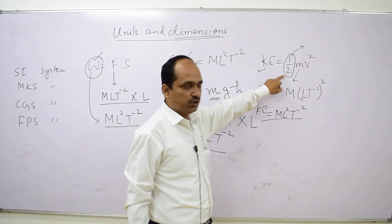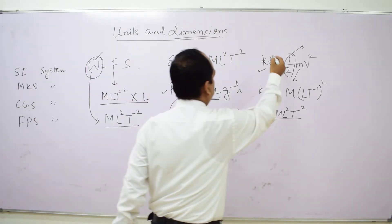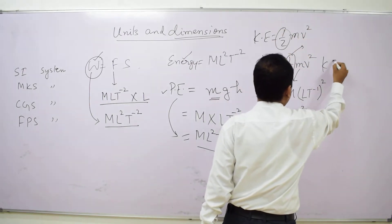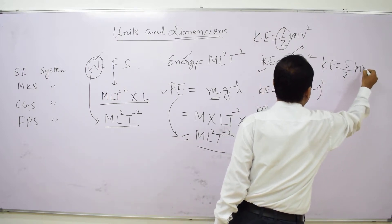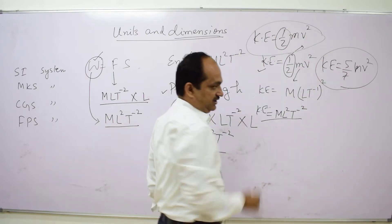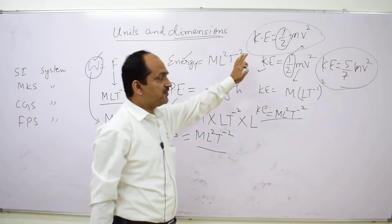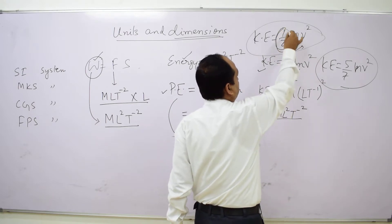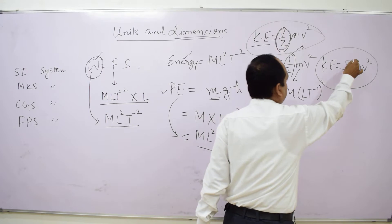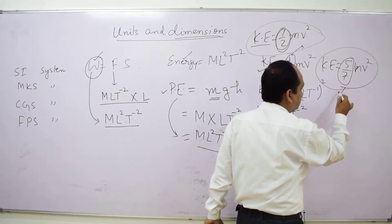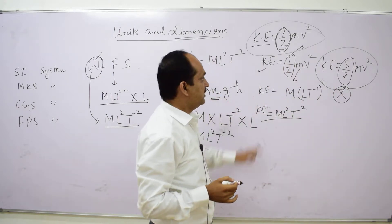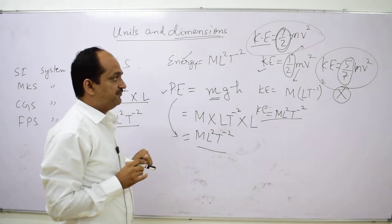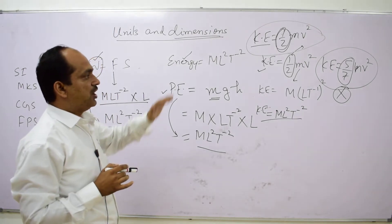The second limitation is that constants have no dimension. For example, if we write K.E. = ½mv² or incorrectly write K.E. = (5/7)mv², both are dimensionally correct because the constants 1/2 and 5/7 are dimensionless. So dimensions cannot verify the numerical value of constants in a formula.